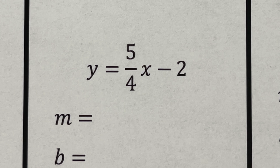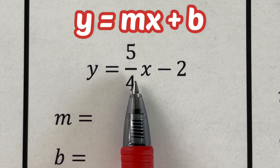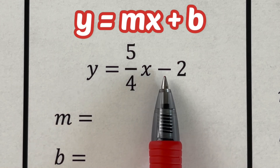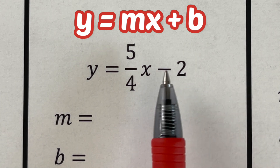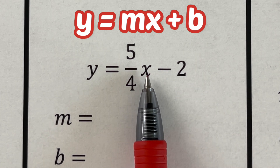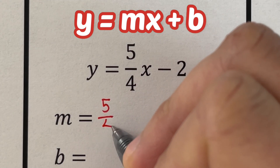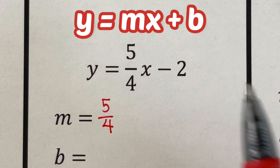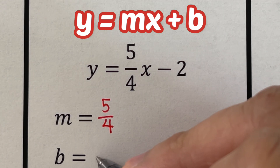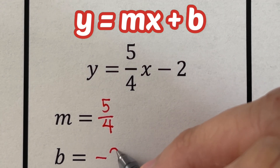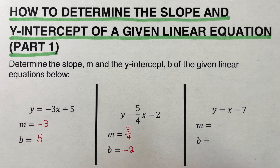Moving on to the second example, which is also in the form y = mx + b. The m, the coefficient of x, is 5/4, and the constant is negative 2, so our b or y-intercept is negative 2.